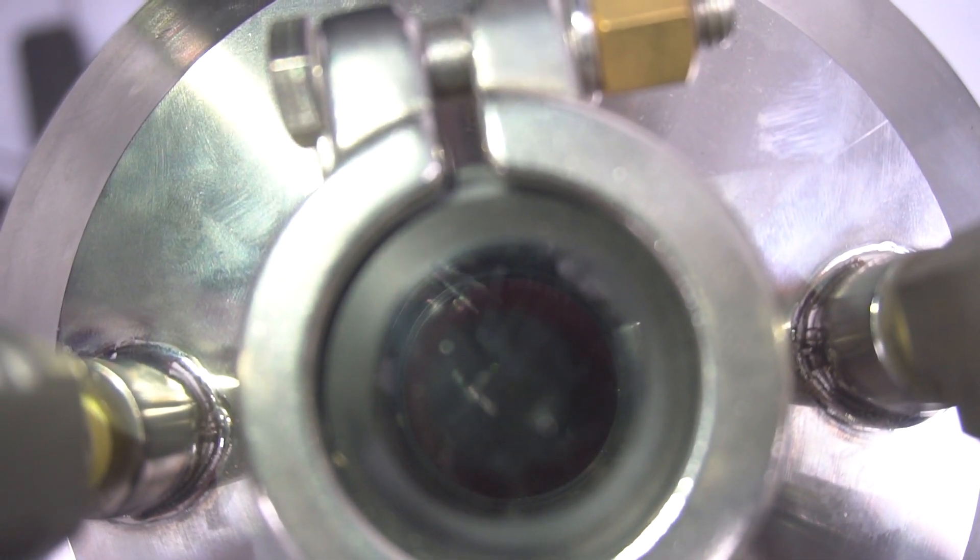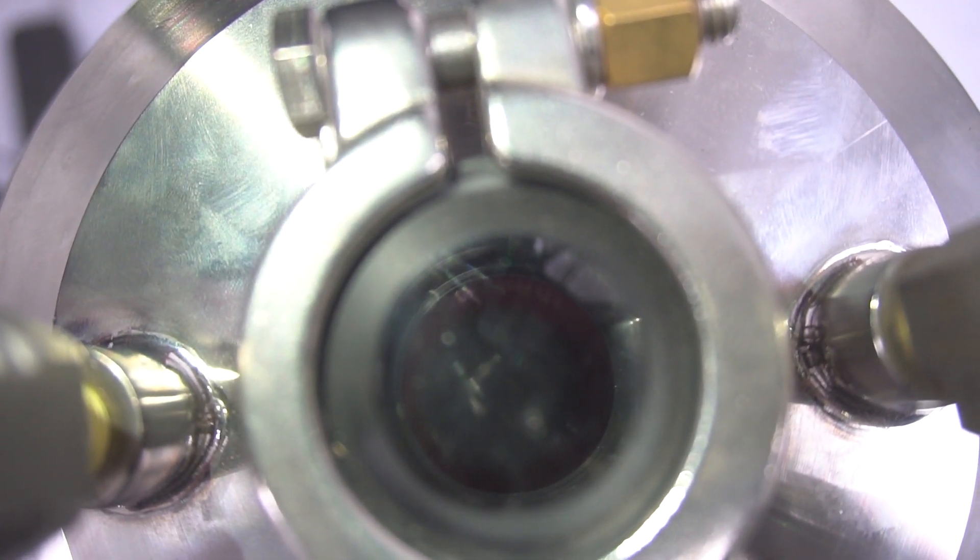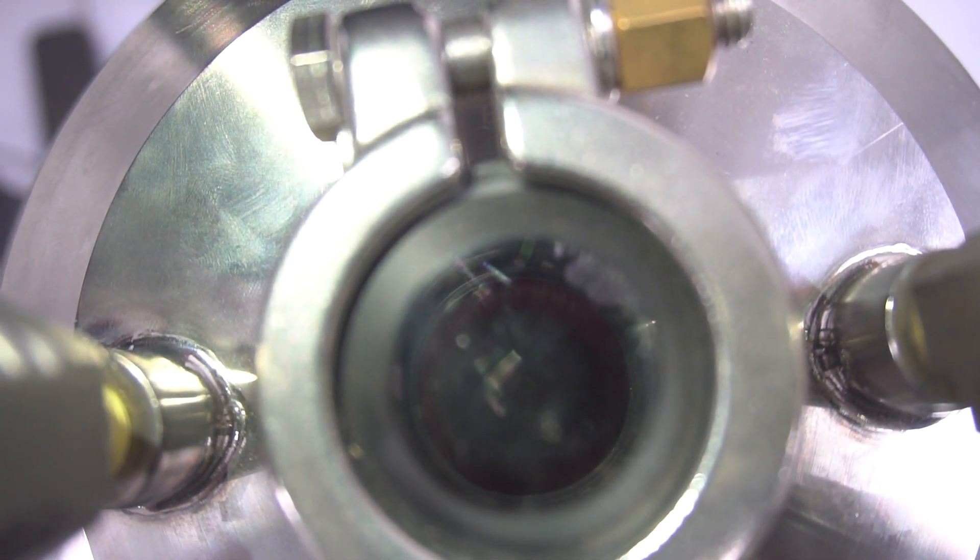Alright, so you can see in the sight glass here, you can see your top container. Any diamonds that start to form, you'll be able to watch them through the sight glass.